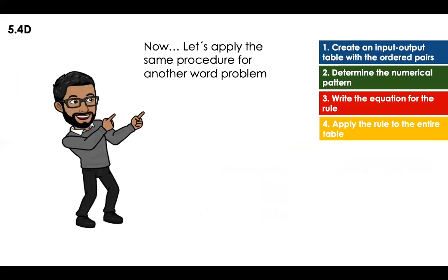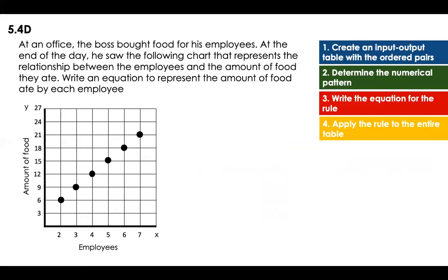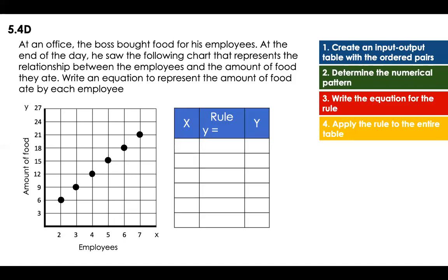Now let's apply the same procedure to another word problem. At an office, the boss bought food for his employees. At the end of the day, he saw the following chart that represents the relationship between the number of employees and the amount of food they ate. Write an equation to represent the amount of food eaten by each employee. So now I'm going to create my input-output table with the ordered pairs based on the information in the graph.